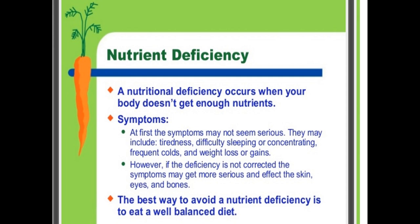What are the symptoms of these non-communicable diseases? At first, the symptoms may not seem serious. They may include tiredness, difficulty sleeping and concentrating, frequent colds, and weight loss or gain. If the deficiency is not corrected, the symptoms may get more serious and affect the skin, eyes, and bones. The best way to avoid a nutrient deficiency disease is to eat a well-balanced diet.